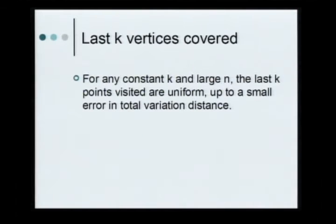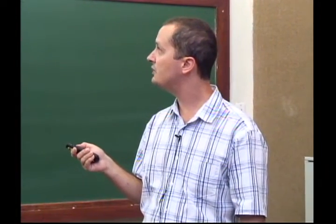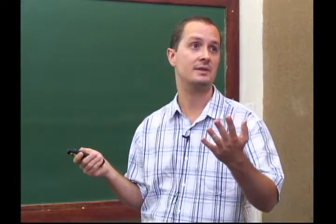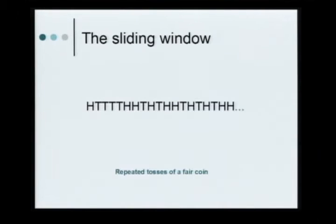One of the things we managed to do is reprove this result in a slightly stronger, microscopic form. We don't need to rescale space. Instead, we prove that you sample a Poisson random variable with the right mean, then choose that number of points uniformly at random on the discrete torus, and the distribution of what you get is close in total variation distance to the distribution of the uncovered set. We can also show that for any constant k and large torus size, the last k points visited are uniform over subsets of size k, up to a small error in total variation distance — nothing special about them.